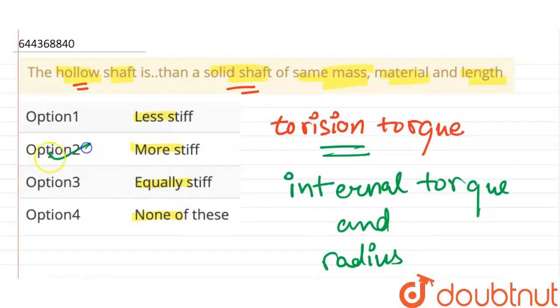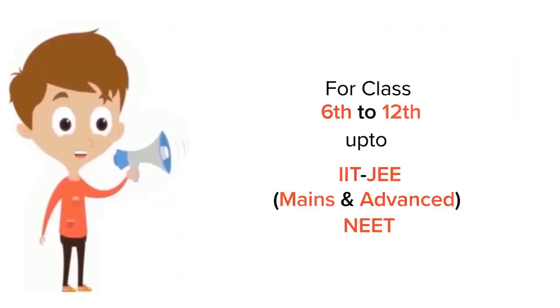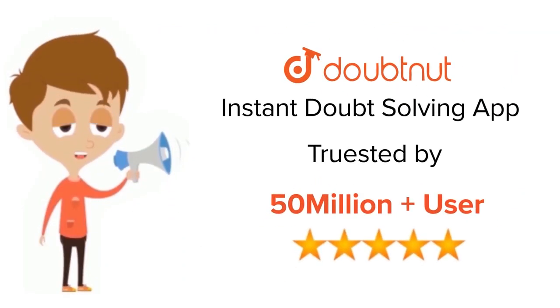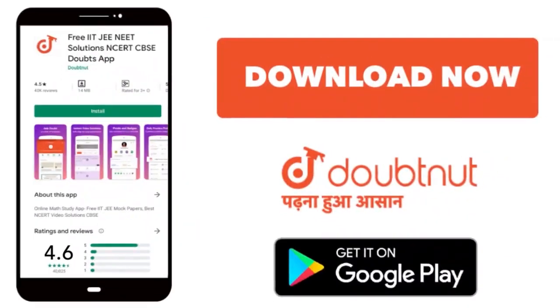So option 2, more stiff, is the correct answer. That's all, thank you. For class 6 to 12, IIT-JEE, and NEET level, trusted by more than 5 crore students, download Doubtnet app today.